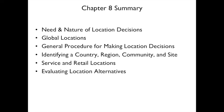In summary, this chapter covered the need and nature of location decisions, global locations, the general procedure for making location decisions — identifying country, region, community, and site — service and retail locations, and several methods for evaluating location alternatives.